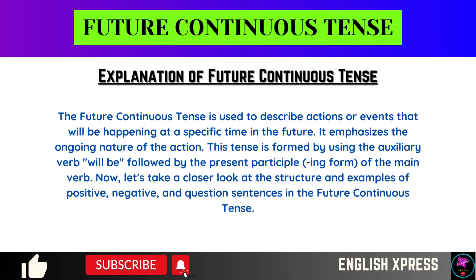The Future Continuous Tense is used to describe actions or events that will be happening at a specific time in the future. It emphasizes the ongoing nature of the action. This tense is formed by using the auxiliary verb 'will be' followed by the present participle, the ing form, of the main verb.